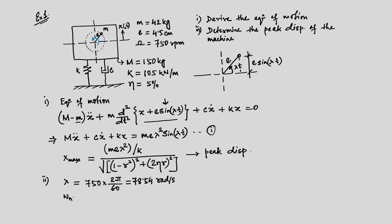Similarly, we find the natural frequency ωn, which is the square root of k divided by m. With the given stiffness and mass, the natural frequency is 23.39 radians per second. The frequency ratio r equals λ divided by ωn, which gives 3.36.